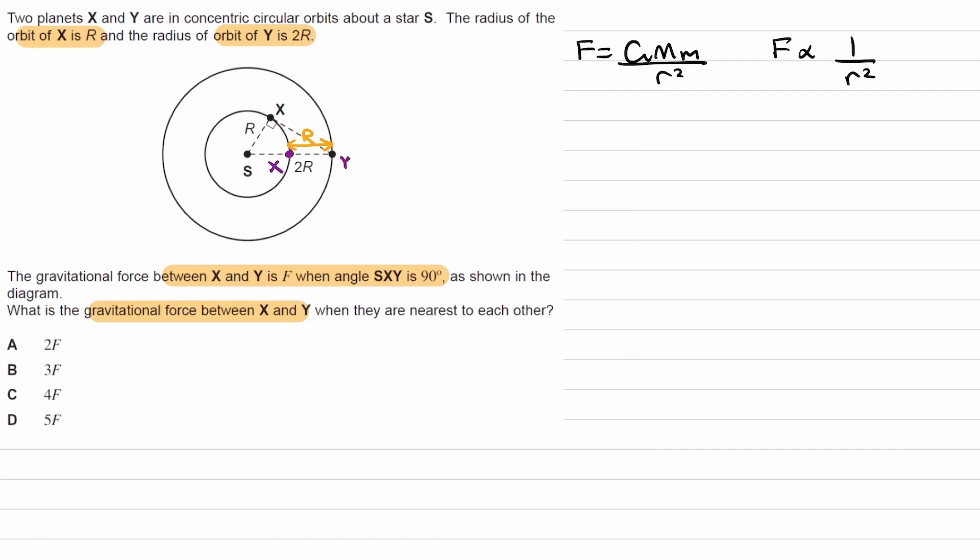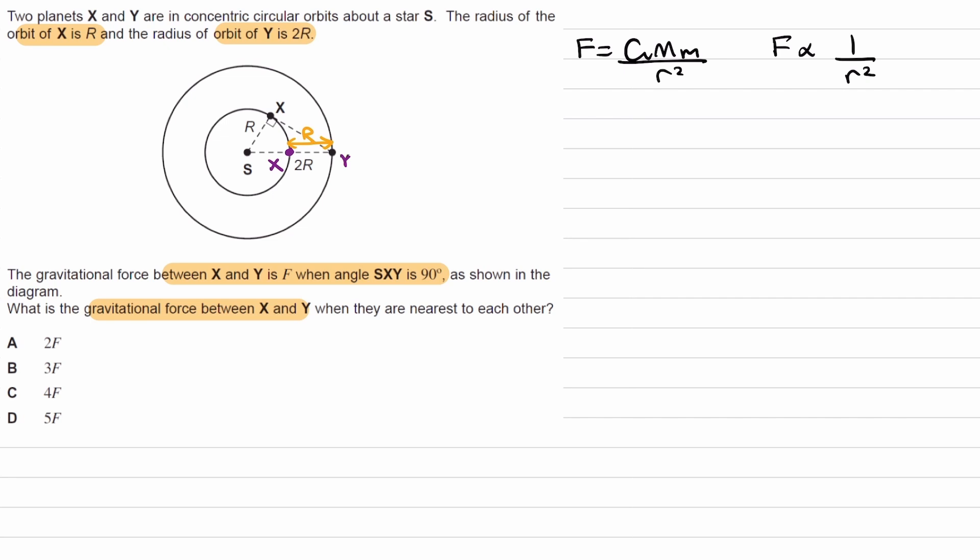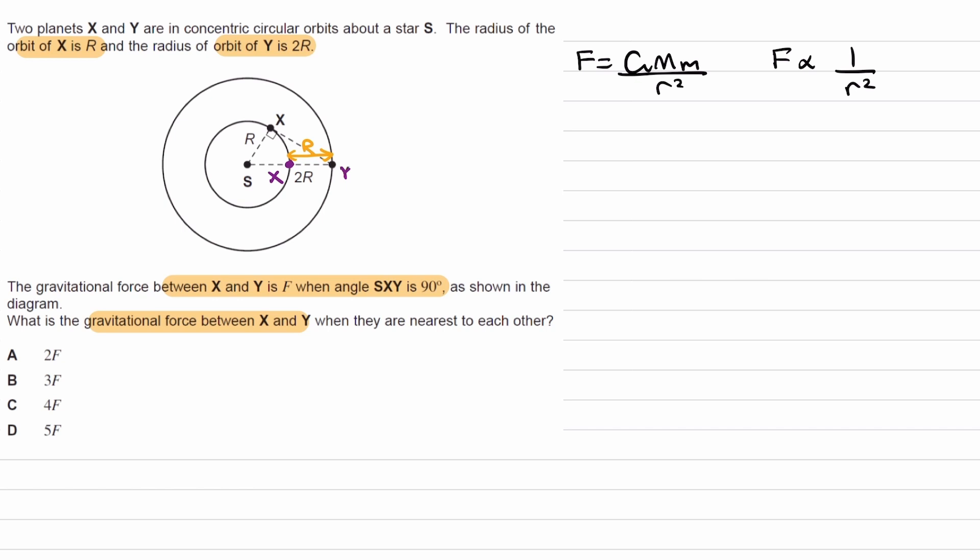Then we can think about the factor by which the distance between the two objects changes from when they're in the position to begin with, so when X is here, Y is here, to the new position they're in, when X is here and Y is there. We need to see how the distance, the separation between them changes.